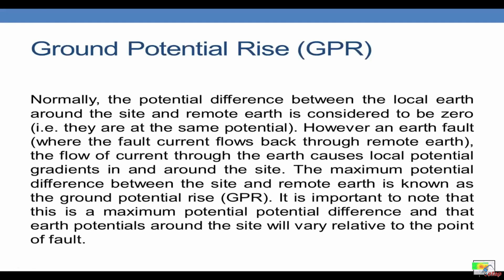Next is the ground potential rise. The potential between the local earth and the site is considered to be zero at normal condition. However, when a fault occurs, the flow of current to the earth causes a potential gradient in and around the site. The maximum potential difference between the site and the earth is known as the ground potential rise or the GPR.